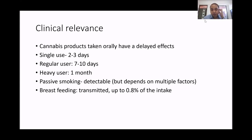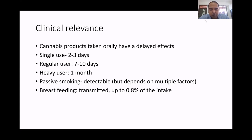Cannabis can be detectable from passive smoking if exposure is high. Interestingly, there was a study from Pakistan where cows fed on cannabis plants, and urine drug tests of children who consumed milk from those cows came back positive. Cannabis can also be transmitted through breast milk.